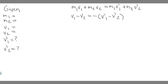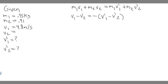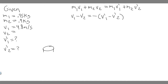Let's lay out what we're given. The hockey puck moving east with a speed of 4.8 m/s is the first one, so m₁ = 0.45 kg and v₁ = 4.8 m/s. East is positive and west is negative — keep that in mind. The other puck is m₂ = 0.90 kg and it's at rest, so v₂ = 0 m/s.